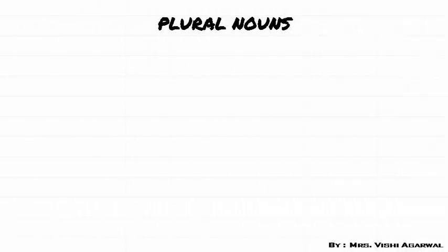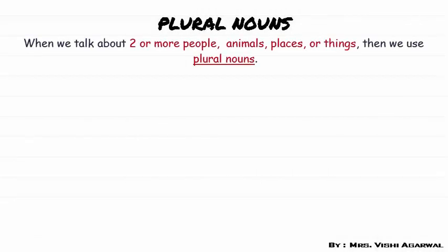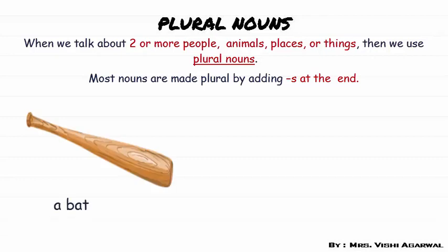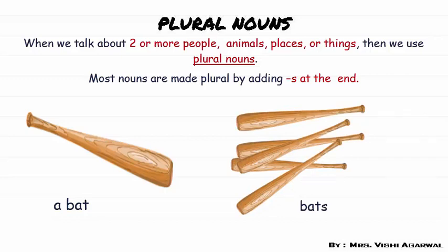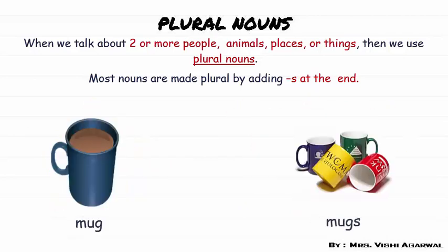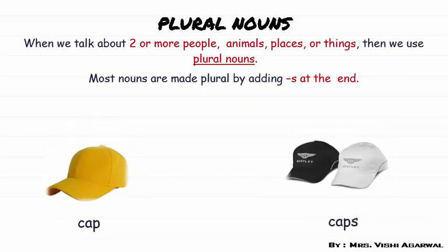Now let's talk about plural nouns. What are plural nouns? When we talk about more than one thing, place, animal or people, then it is called plural nouns. Most nouns are made plural by adding S at the end. Suppose a singular word is given — bat — then the plural of bat is bats. We have added S at the end of bat. Star becomes stars, fence becomes fences, mug becomes mugs, cap becomes caps. In all these words you can see that we have added S at the last of the word to make it plural.